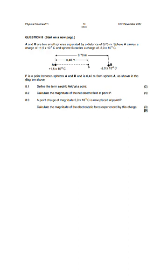A and B are two small spheres separated by a distance of 0.7 meters. Sphere A carries a charge of positive 1.5 times 10 to the minus 6 Coulombs, and B carries a charge of negative 2 times 10 to the minus 6 Coulombs. P is a point between A and B, and is 0.4 meters from sphere A as shown in the diagram.